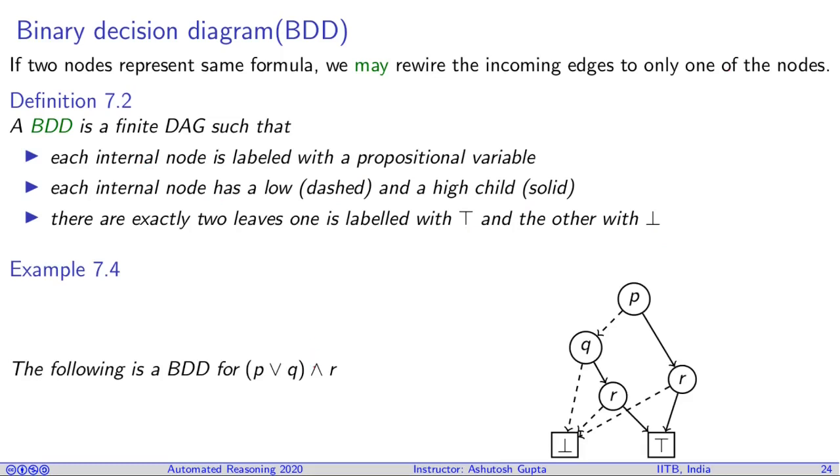For example, to represent this formula we will get this decision diagram. We have a low child to Q, then a high child R, and Q has a high child R and a low child here, and then they all converge to false or true.